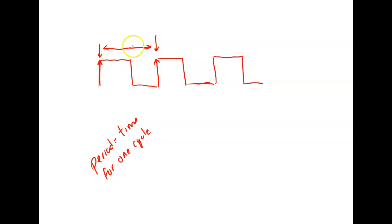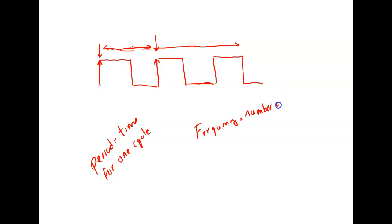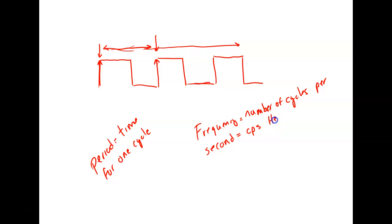If it's a repetitive waveform, the cycles are going to be occurring at a certain rate, and we refer to that as frequency — basically the number of cycles per second. It could be rated in CPS, but we usually don't do that. Usually it's rated in a unit called Hertz, abbreviated uppercase H, lowercase z. So Alabama Power and TVA — the frequency of AC here in the United States is 60 cycles per second, or 60 Hertz.